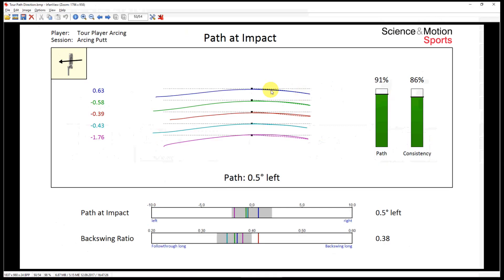This is now the path of a tour player in the top view. You see, it looks very regular, very consistent, and the path direction at impact is only 0.5 degrees to the left, and the consistency is reasonable with 86%.